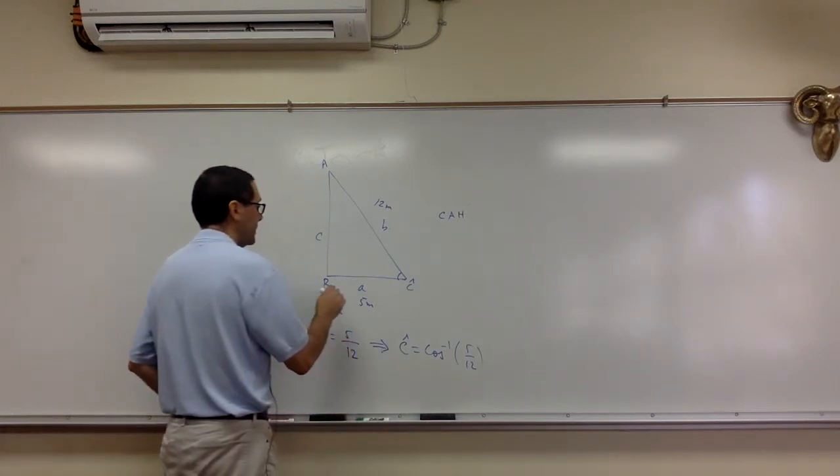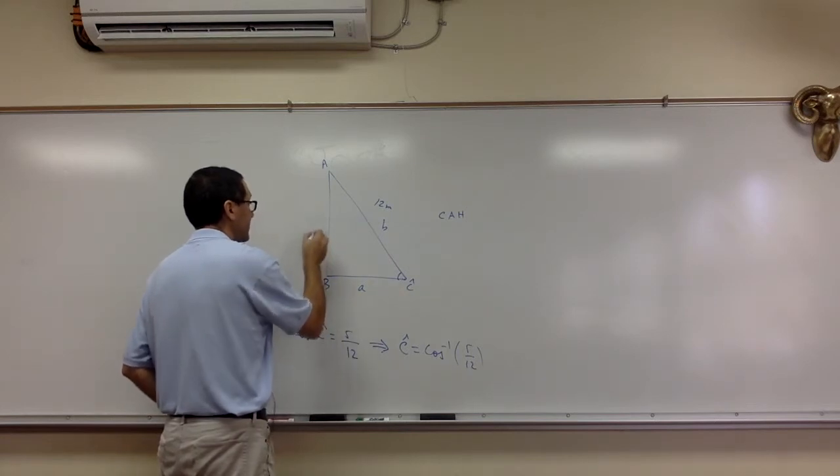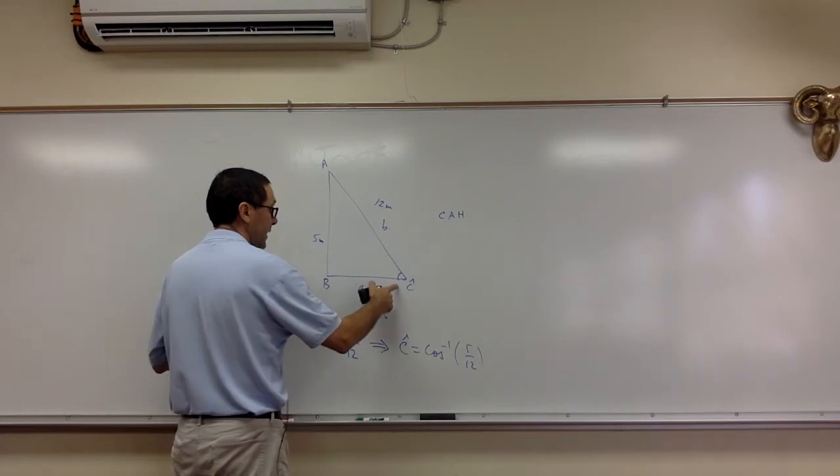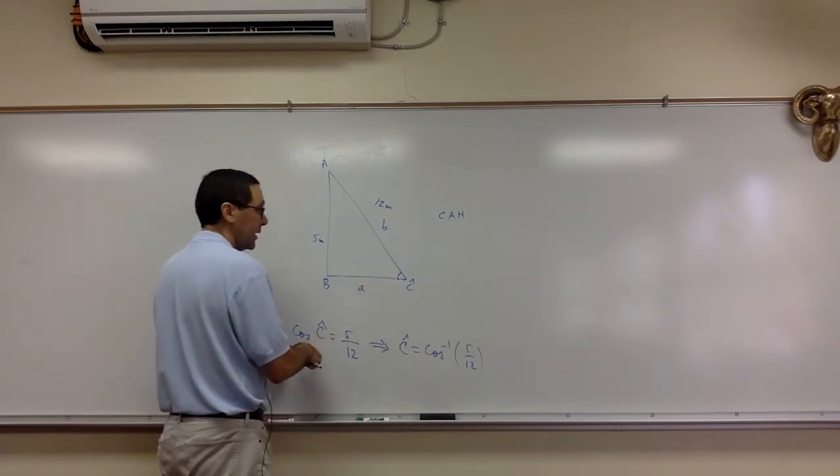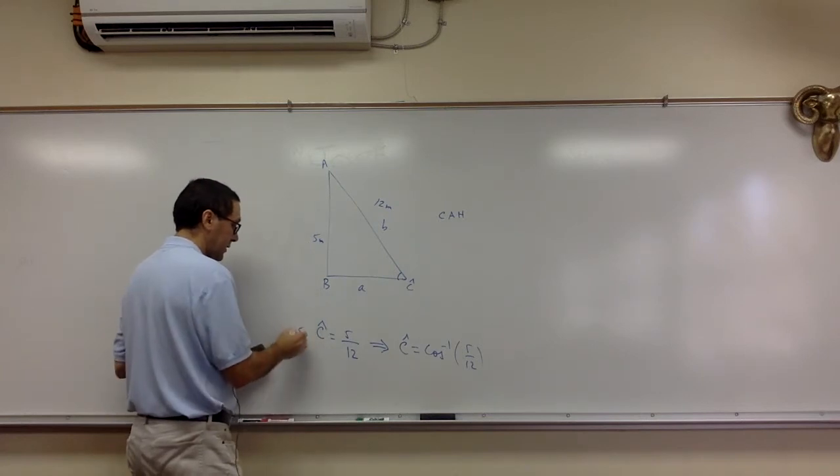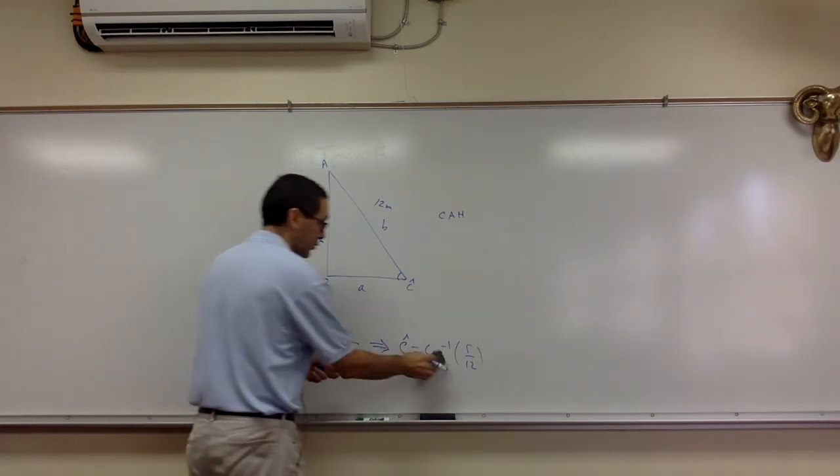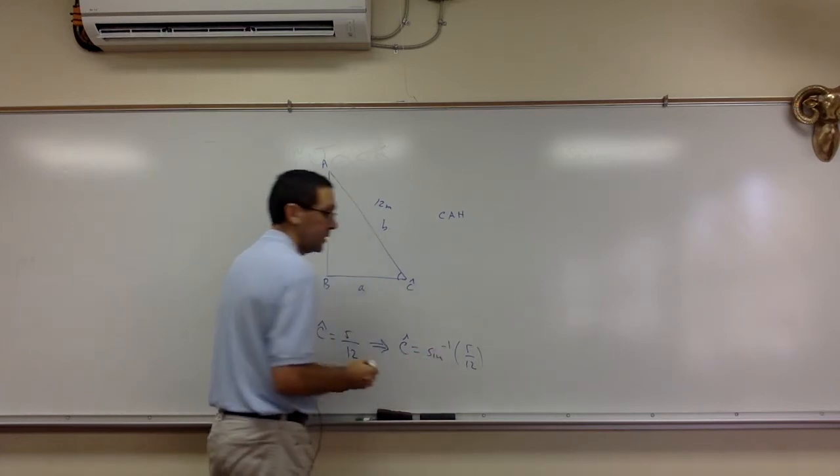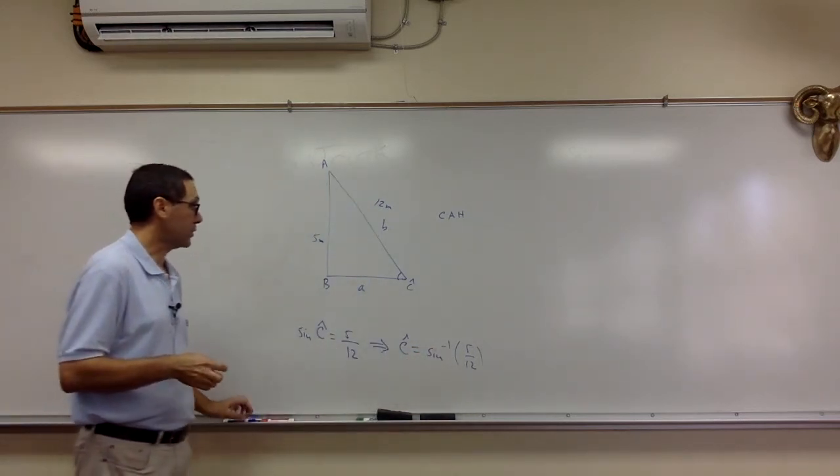Now let's say I had this side as 5 meters, and I wanted to find angle C. Now cosine will not cut it, because now I have the opposite and the hypotenuse. So in this case, I'll do sine, and I can do inverse sine here. So this should be pretty straightforward.